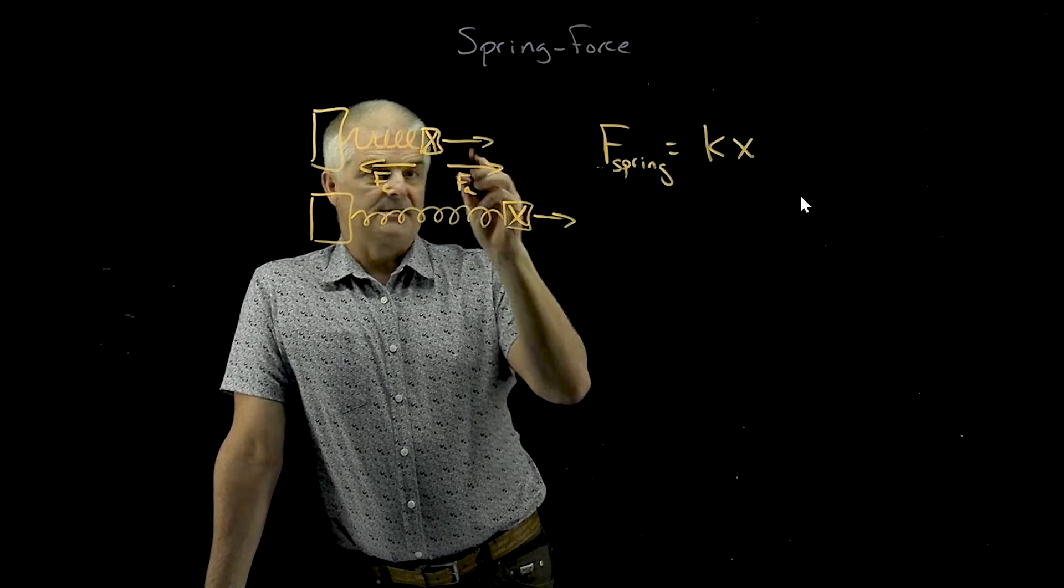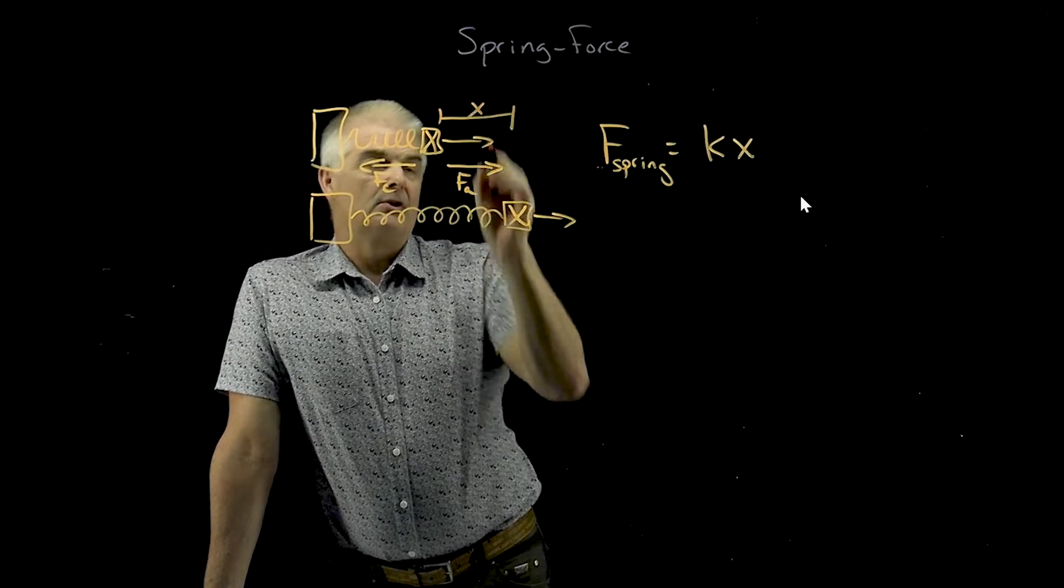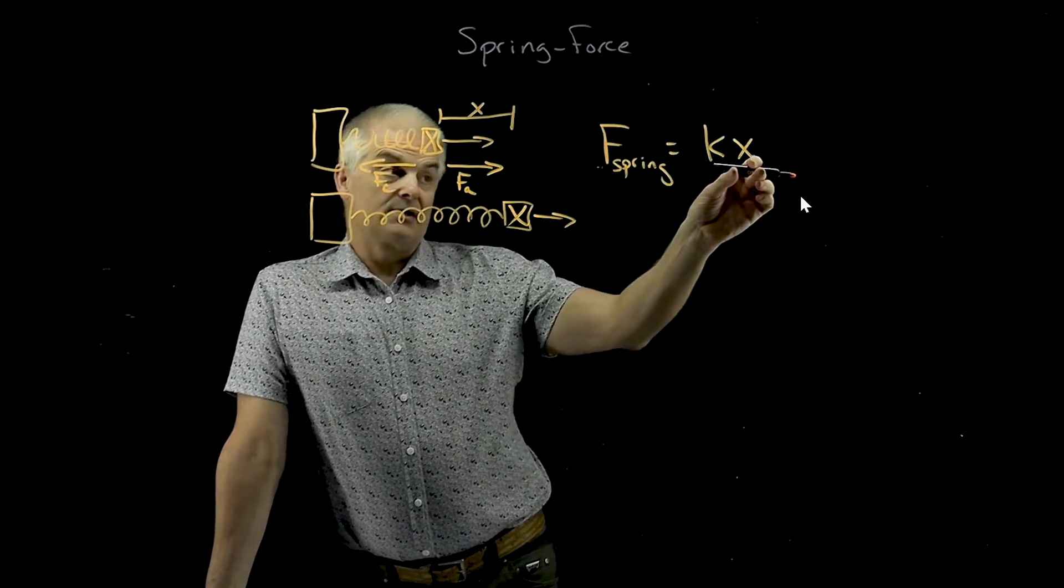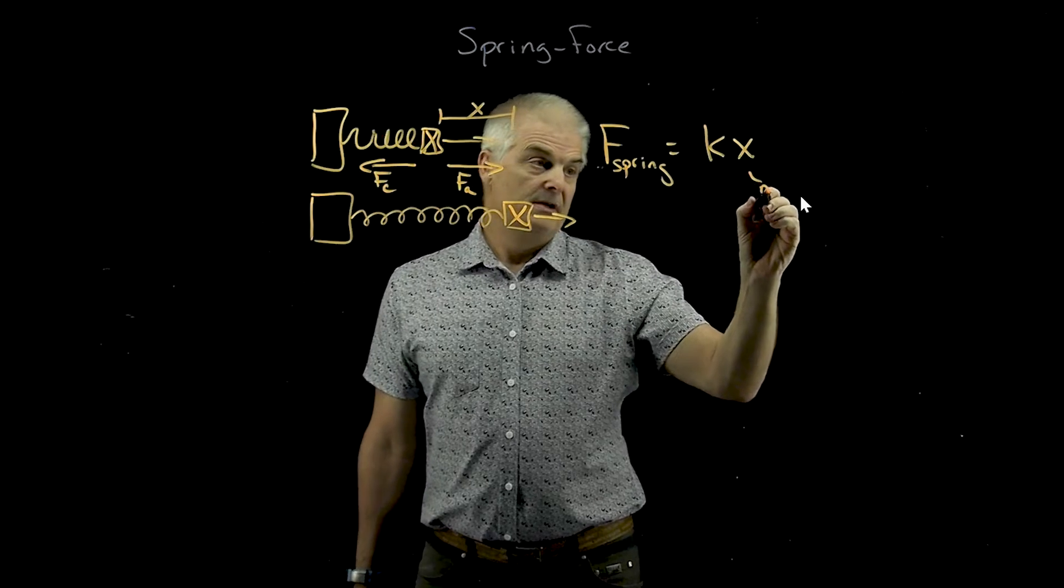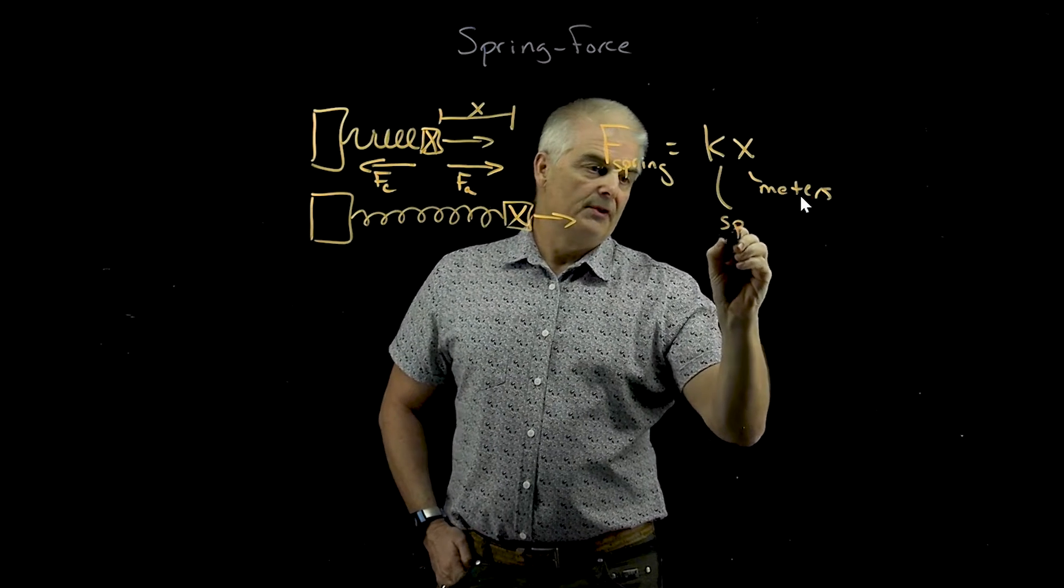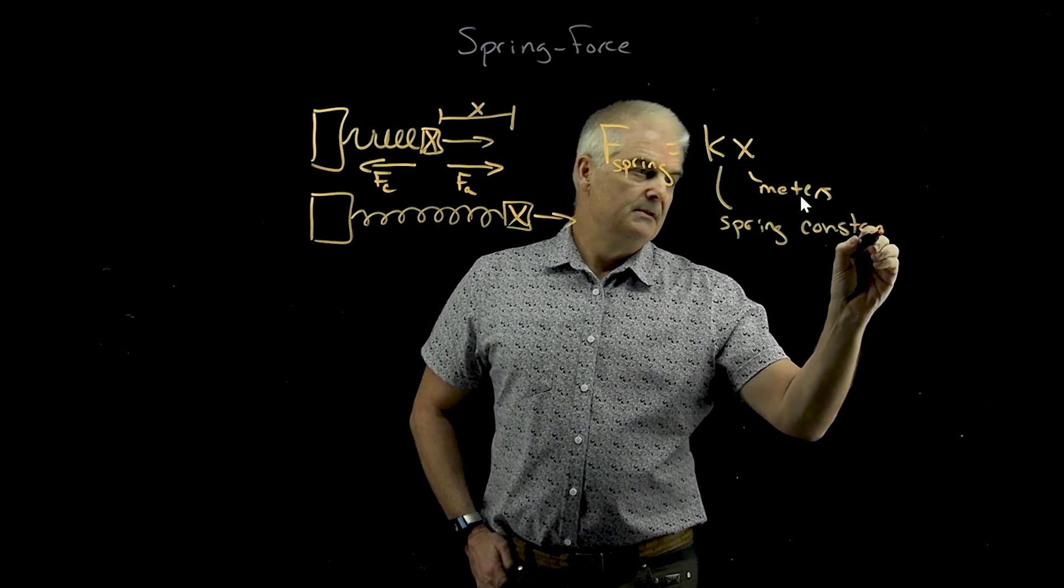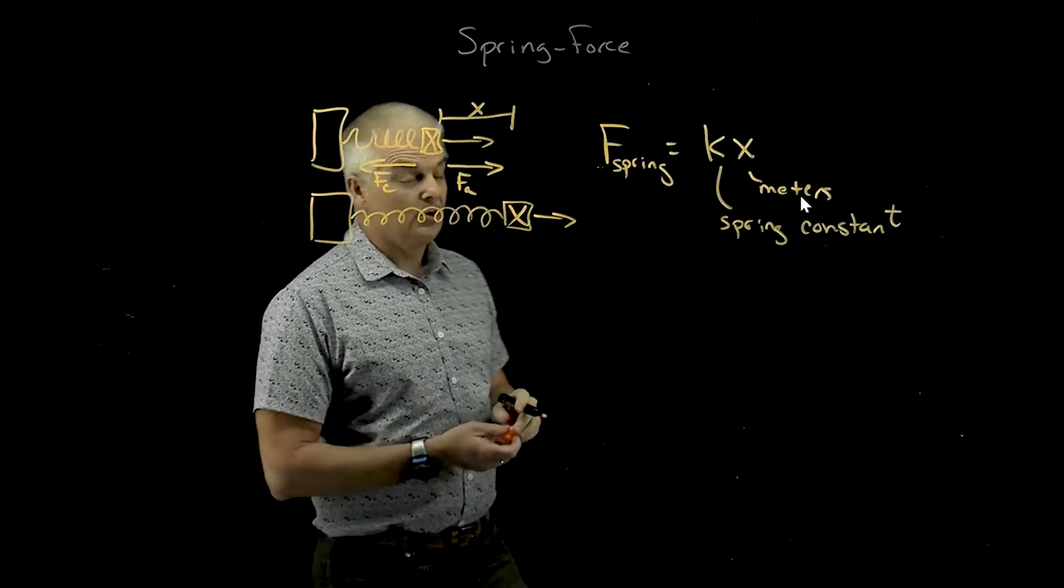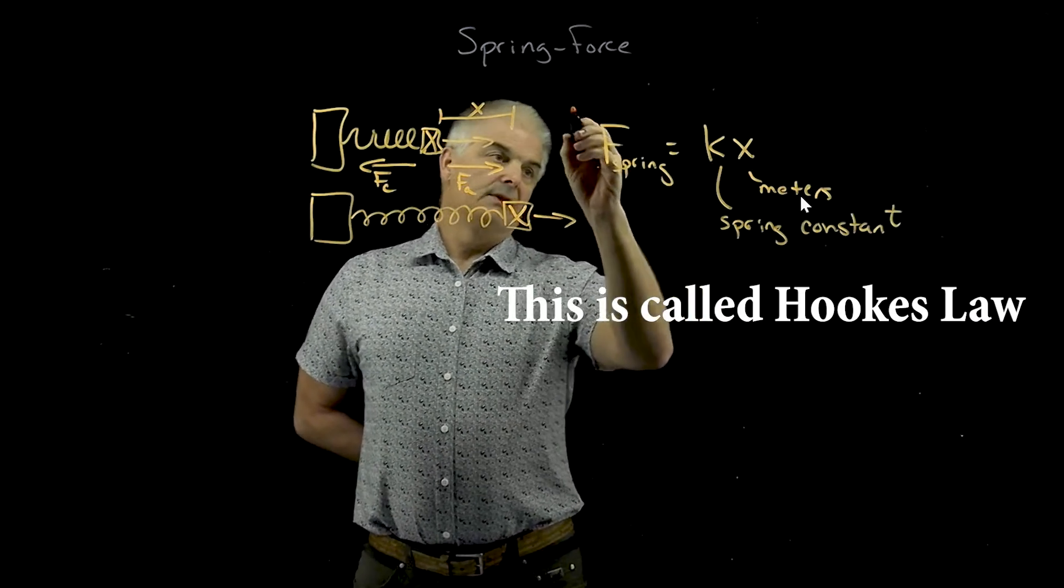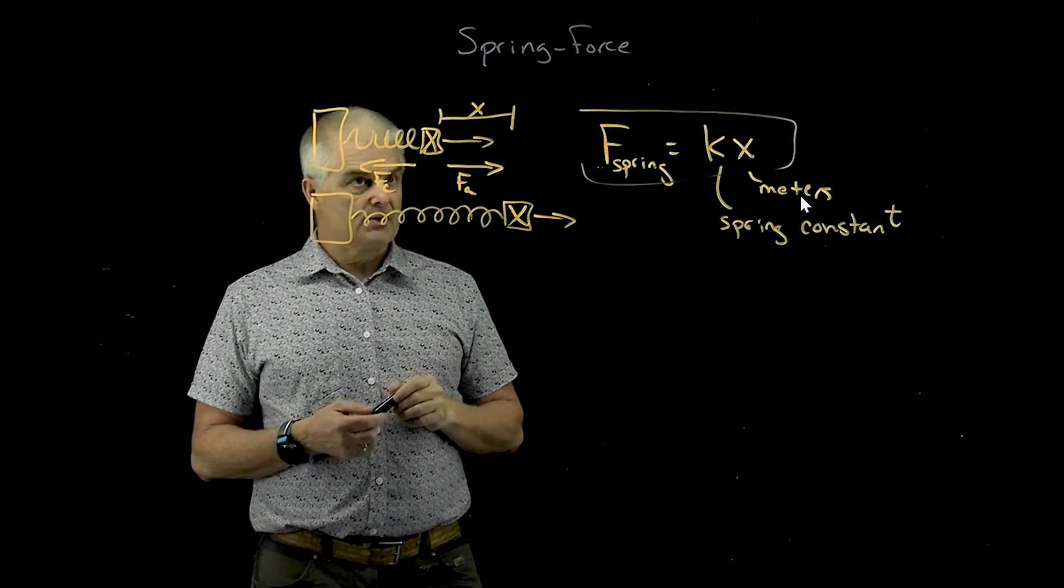Now, X is how much you compress the spring. So if I were to measure from here to here, and we call that X, that's the level of compression. So X is going to be measured in meters, and the K is called the spring constant. In fact, this is actually called Hooke's Law. Mr. Hooke figured out this whole relationship, and that allows us to do some interesting questions.